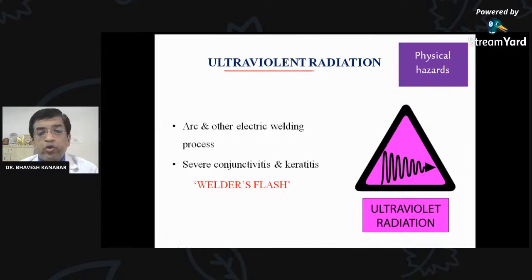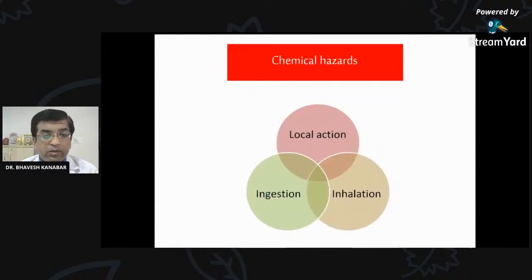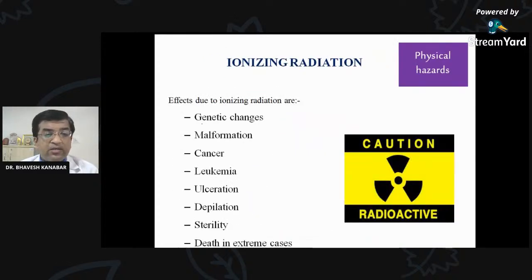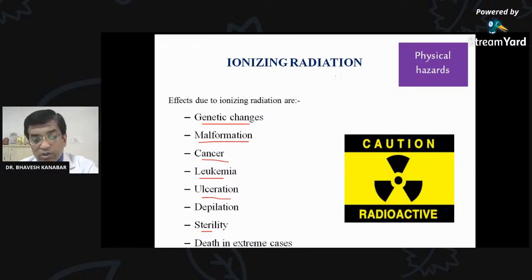Ultraviolet radiation is an important physical hazard where arc and electric welding processes are carried out — it can lead to severe conjunctivitis and keratitis, causing welders' flash. Ionizing radiation is another form of physical hazard which can lead to genetic changes, malignant formation, cancer, leukemia, ulceration, sterility, and death. You can see the radioactive symbol — different from the biomedical waste symbol.